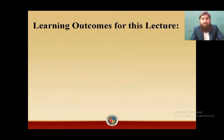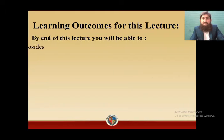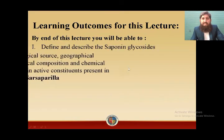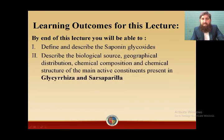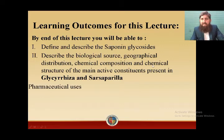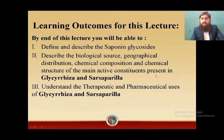Learning outcomes for this lecture. At the end of this lecture, you will be able to define and describe the saponin glycosides, and you will also be able to describe the biological source, geographical distribution, chemical composition and structure of the main active constituents present in glycyrrhiza and sarsaparilla. You will also be able to understand the therapeutic and pharmaceutical uses of glycyrrhiza and sarsaparilla.